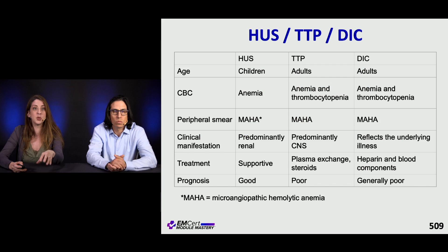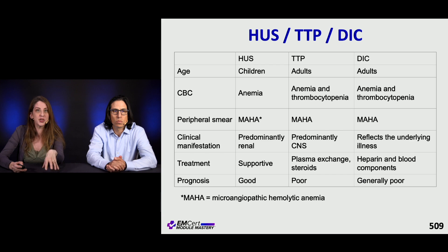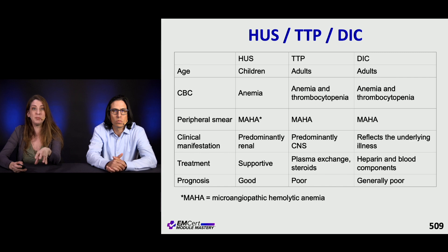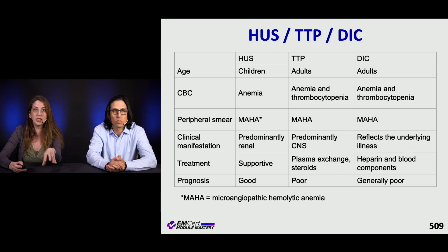This slide summarizes the differences between HUS, TTP, and DIC. HUS is easy because it occurs in children. TTP is distinguished by predominant CNS manifestations. HUS kids typically do well; TTP has a poorer prognosis; and DIC patients can be extremely sick.